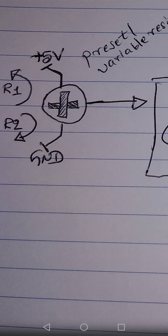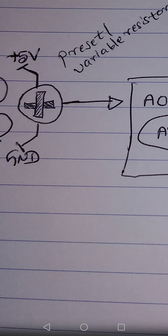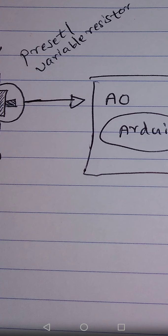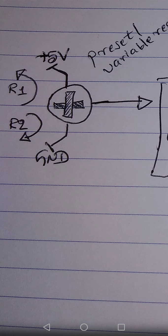If you rotate the cross in the R2 direction, the middle pin's voltage value comes down because you are rotating toward ground. If it is at the topmost of the R2 direction, the middle pin's voltage will be zero and the analog value at A0 will be zero. If you don't understand the 0–1023 range, you need to watch the previous videos, especially video number 20.